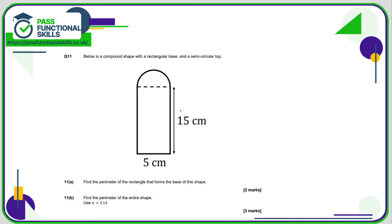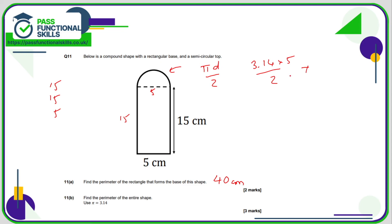Question 11: we want the perimeter of a rectangle with a semicircle on top. The rectangle has sides 5, 15, 5, and 15: 15 plus 15 is 30, plus 5 plus 5 is 40 centimetres. The perimeter of the entire shape is 15 plus 15 plus 5 plus half the circumference. The diameter is 5, so: 3.14 times 5 divided by 2, plus 15 plus 15, which is 30, plus 5 is 35. Total: 42.85 centimetres.